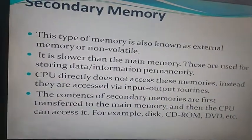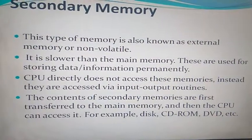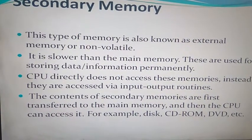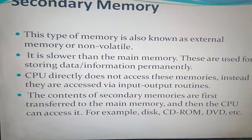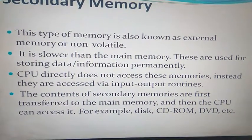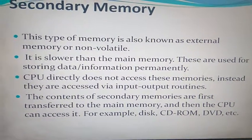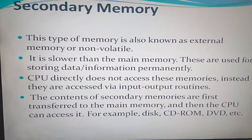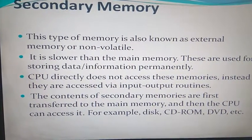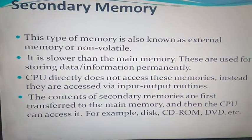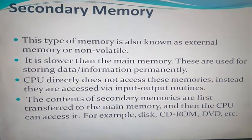Now we come to secondary memory. As a quick recap, the types of memory are: cache memory, main memory, and secondary memory. Secondary memory is auxiliary memory — for example, CDs and DVDs. These are all secondary memories where we store data externally. This type of memory is also known as external memory.